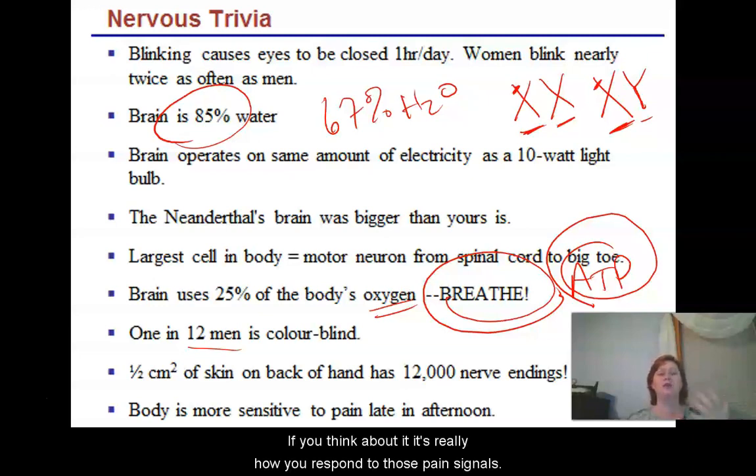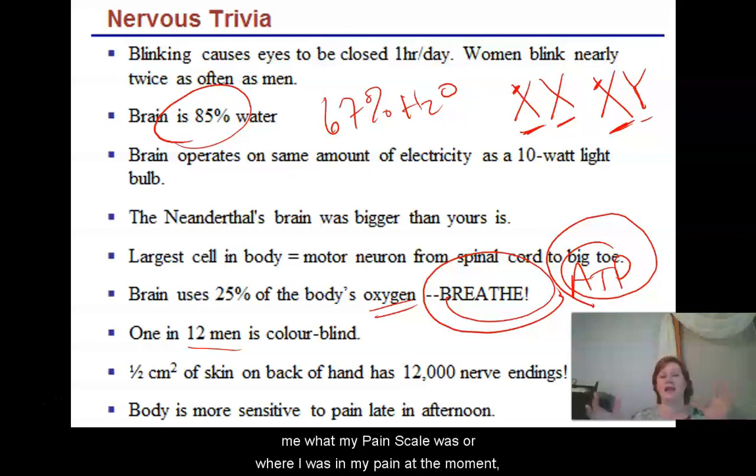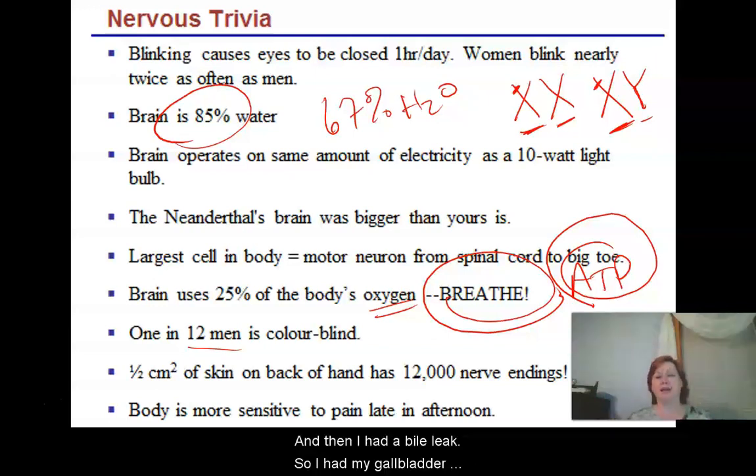If you think about it, it's really how you respond to those pain signals. We think about things like pain tolerance or just your perception of pain. I'll give you an example. I used to think if I would go to the hospital and they asked me what my pain scale was, I would have said childbirth was probably a 10. That had been the most pain I'd probably ever experienced. And then I had a bile leak, so I had my gallbladder removed and had a bile leak about a week later. And I would say that my pain scale shifted so much that childbirth without an epidural ran at a pain of about two. So pain is about perception.